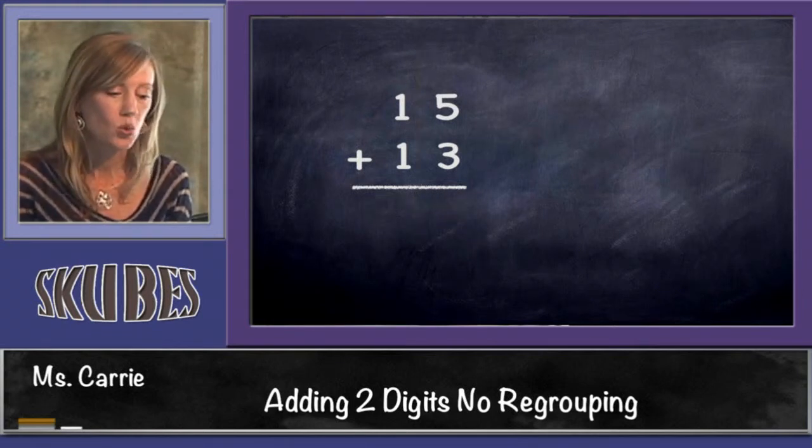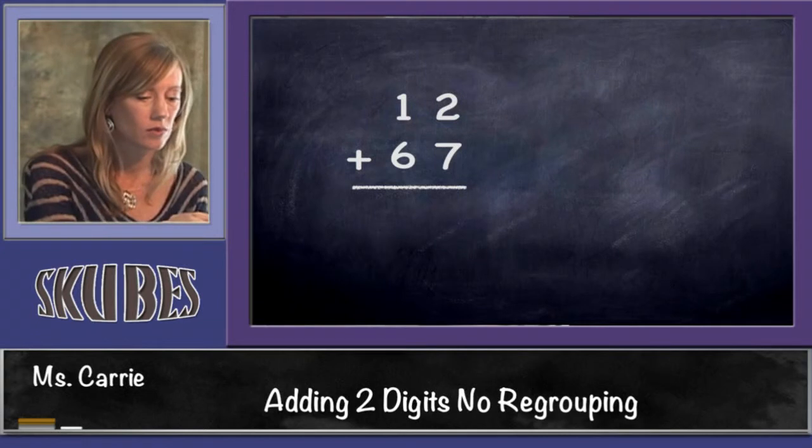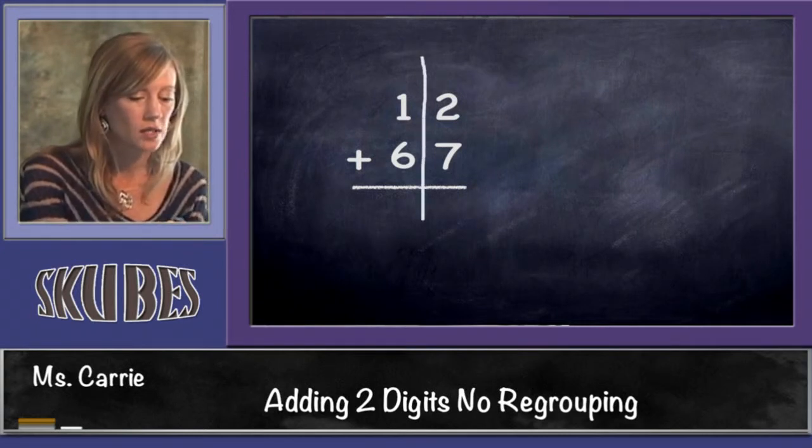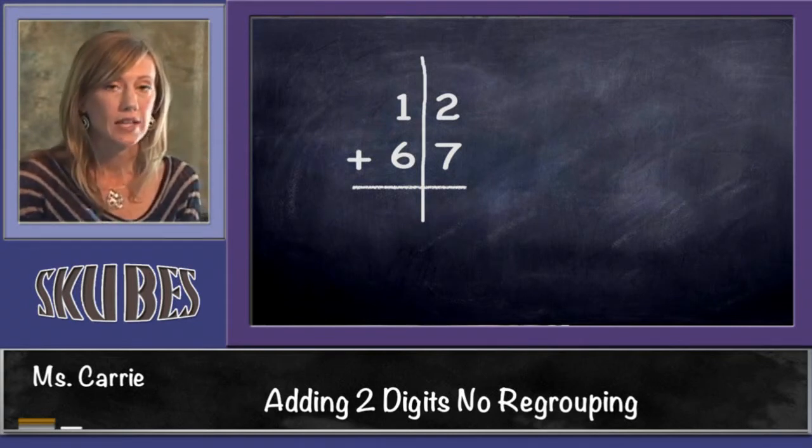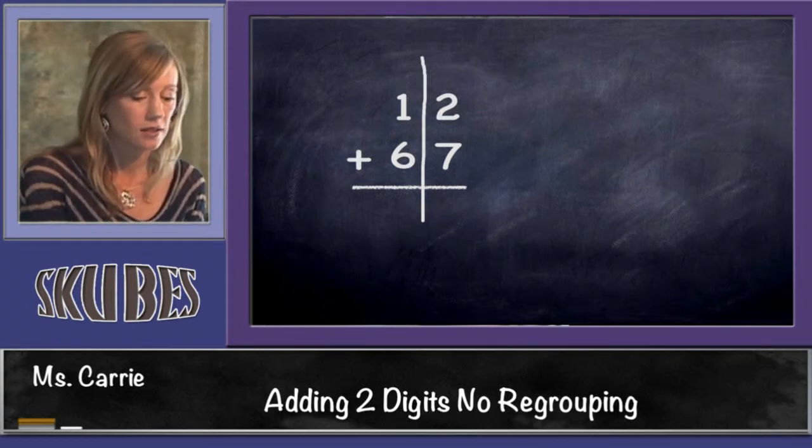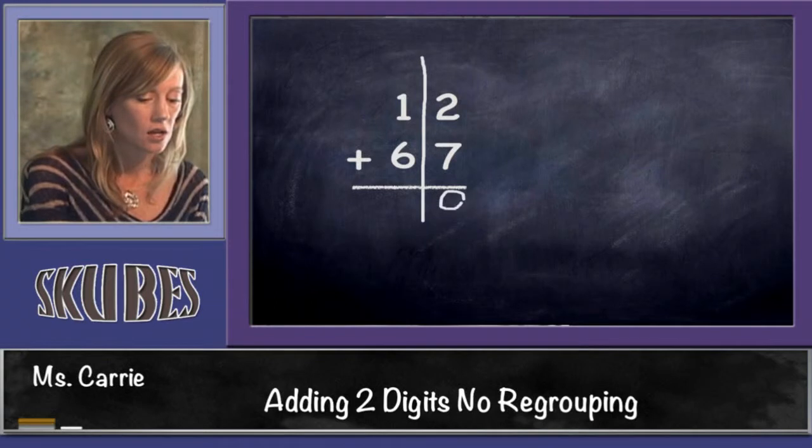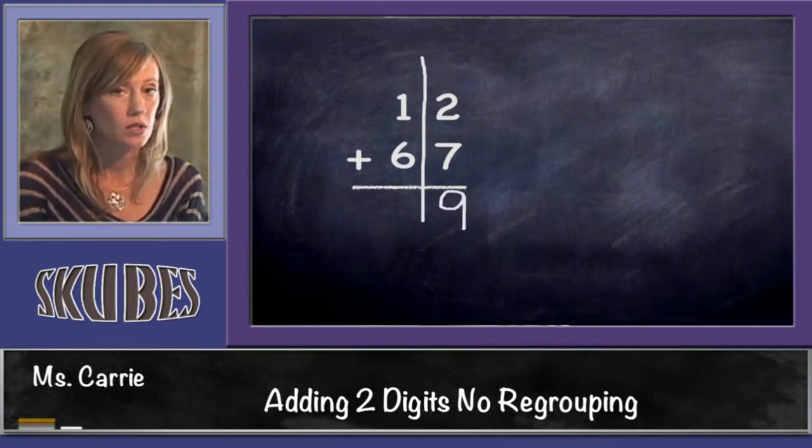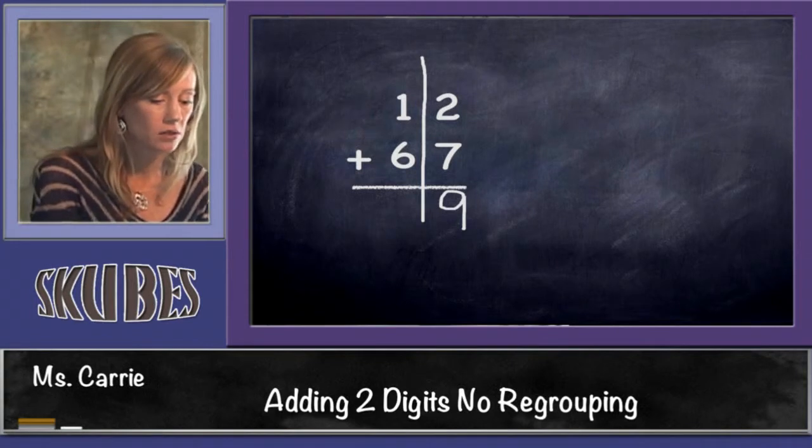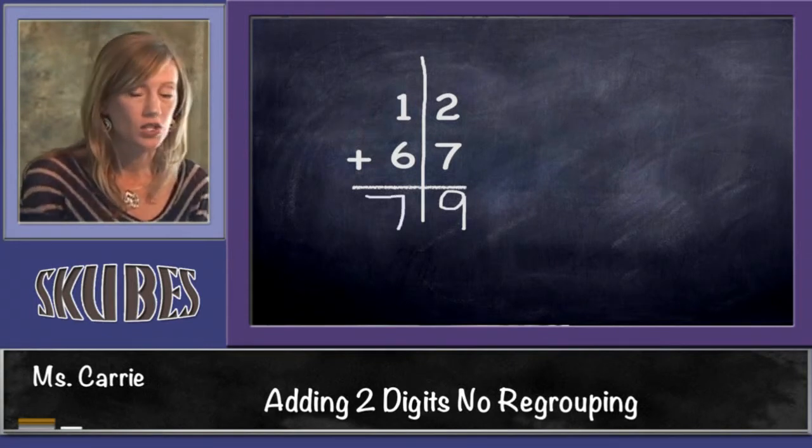Let's add 12 plus 67. Start in the ones column. Seven plus 2 would be 7, 8, 9. And 1 plus 6—we're going to start with 6 first, plus 1 more would be 7. So our answer is 79.